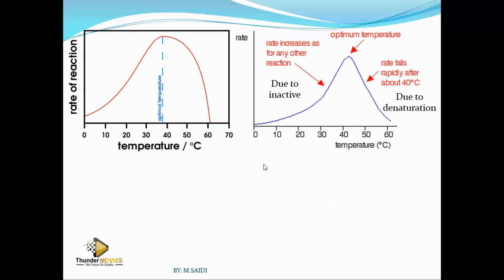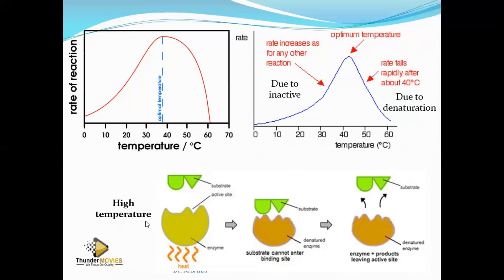Some enzymes can work at higher temperatures — for example, those found in thermobacteria, like those in hot springs, which can work at temperatures above normal. When you heat the enzyme above its optimum, the enzyme shape changes. When the shape changes, the substrate cannot be acted upon and will leave without being broken down. The action stops completely if the temperature is above the optimum, and it keeps reducing until the whole process cannot take place.